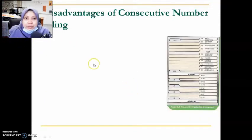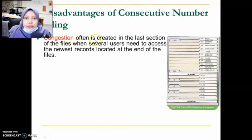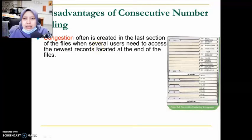However, there are disadvantages to this filing method. Congestion is often created in the last section of the file when several users need to access the newest records located at the end of the file. Because the most recent records are always at the back, when more than one staff member needs to file at the same time, it becomes crowded and congested at that same drawer.